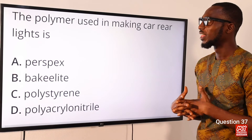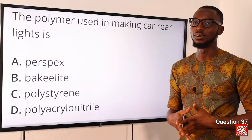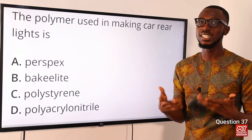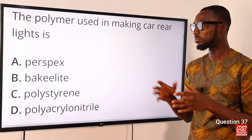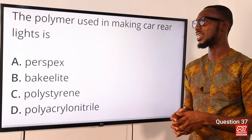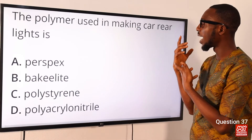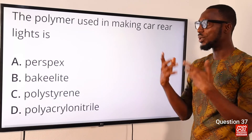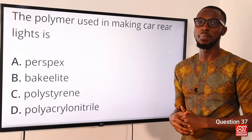Question 37: The polymer used in making carrier lights is what? It's Perspex. Perspex is strong, hard, transparent, and has a glossy surface, so it is used in place of glass. Its uses include carrier lights, street lamps, fish tanks, contact lenses, windshields, and windowpanes. The correct option is option A for Perspex.